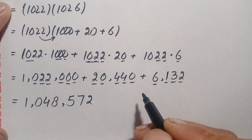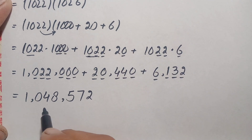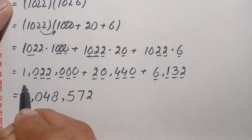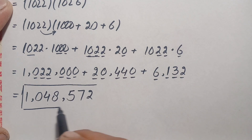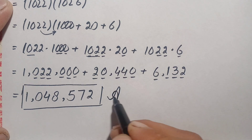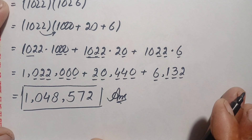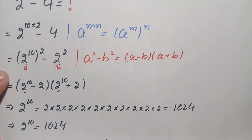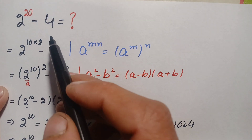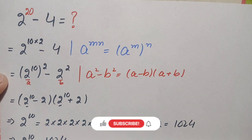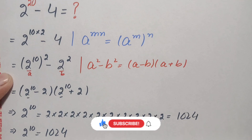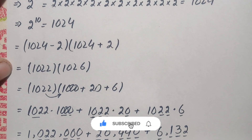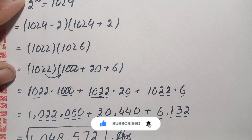Adding these results together gives 1,048,572. So finally, 1,048,572 is our final answer and the value of this interesting exponential problem. If you like this video, don't forget to subscribe to my YouTube channel for more interesting step-by-step math videos. Thanks for watching.